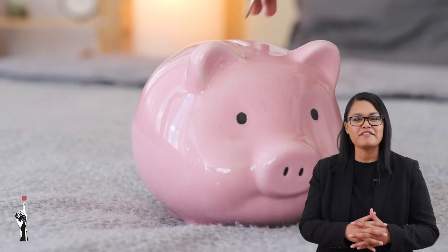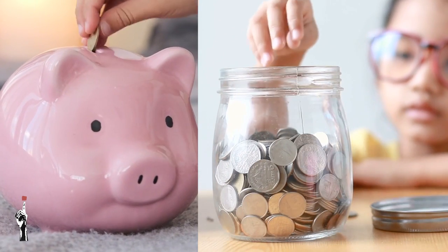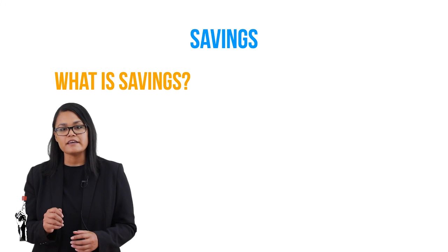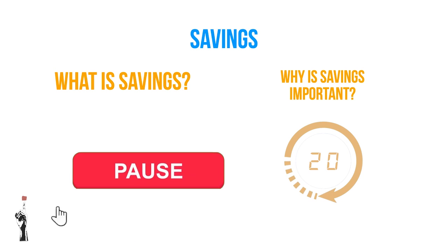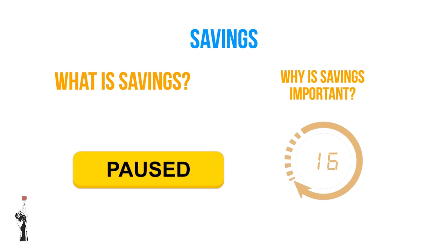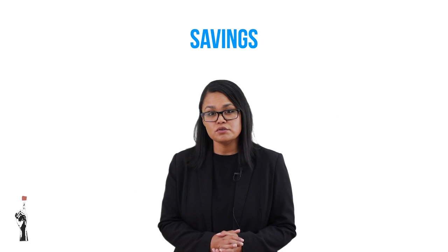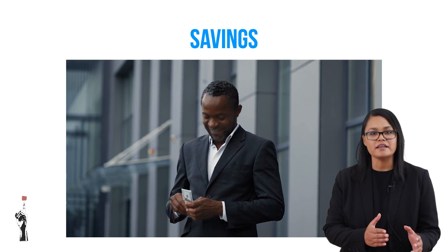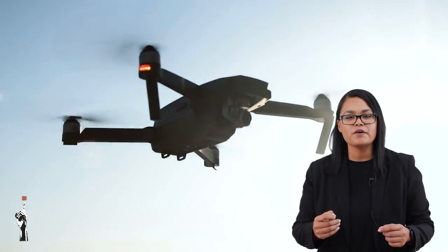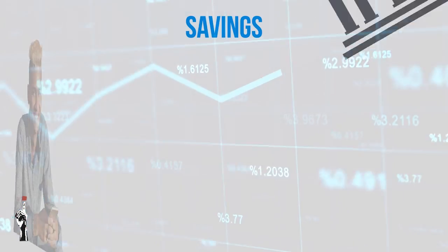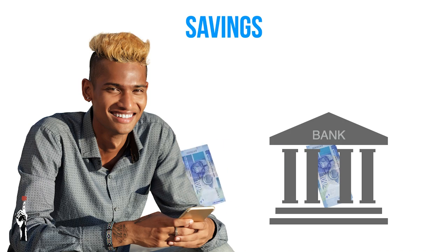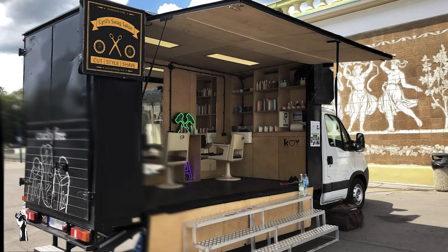Who of you have a piggy bank, or whose parents have already opened up a savings account for you at the bank? When you save money, it actually means that you spend less money in order to put money aside for emergencies, or maybe you want to buy something bigger later on, or to earn interest on your savings and therefore generate more money. Cyril saved for an entire year so that he could purchase a mobile truck for Cyril's Swag Salon so that he could conveniently cut people's hair at their homes.